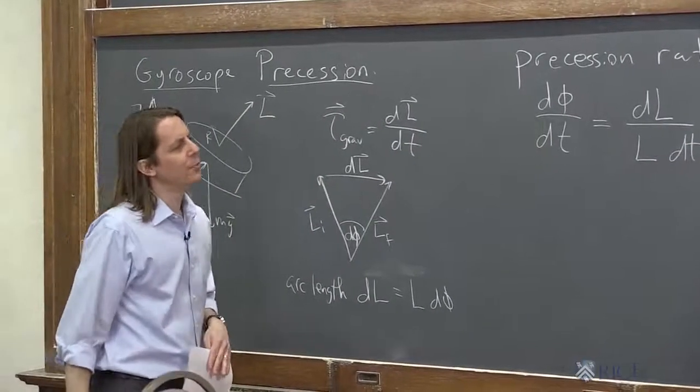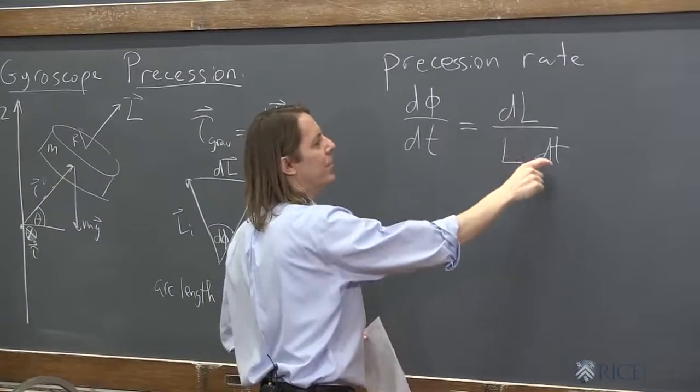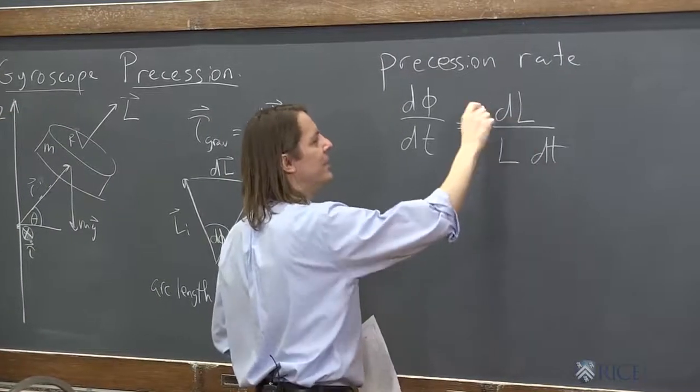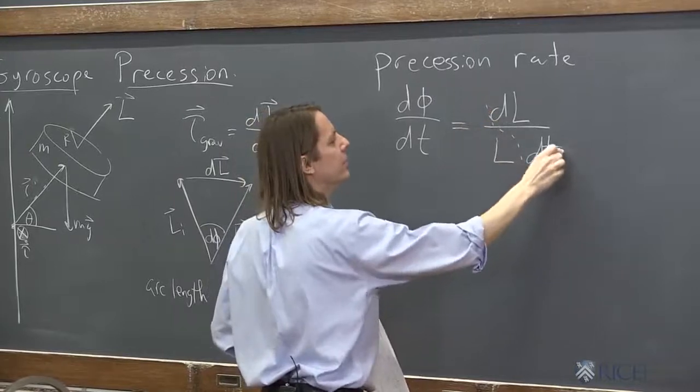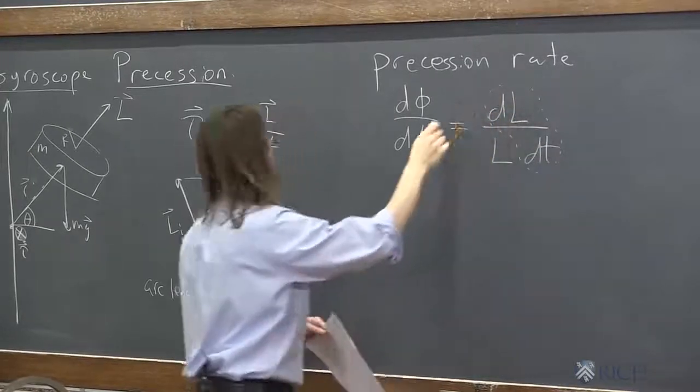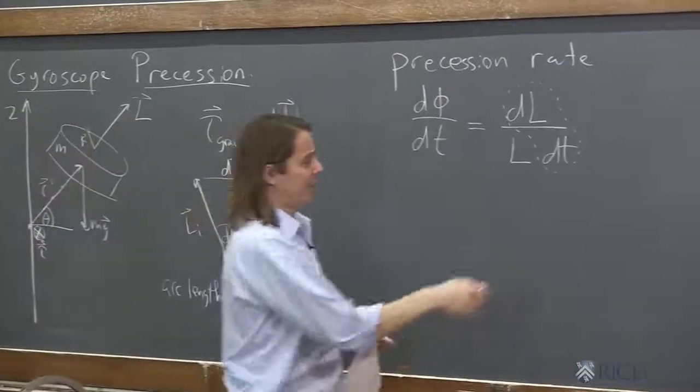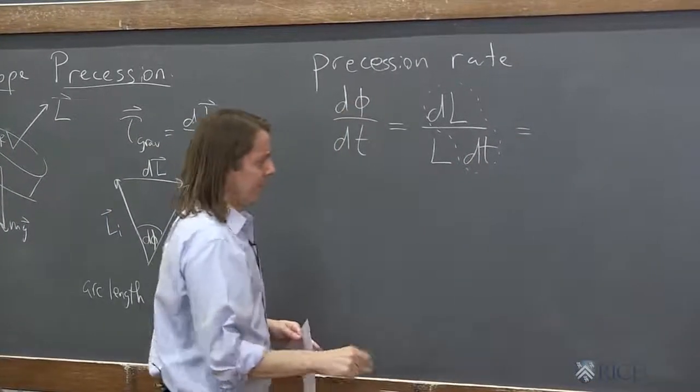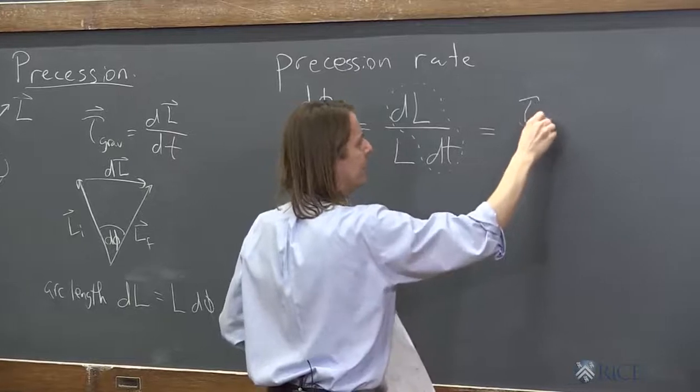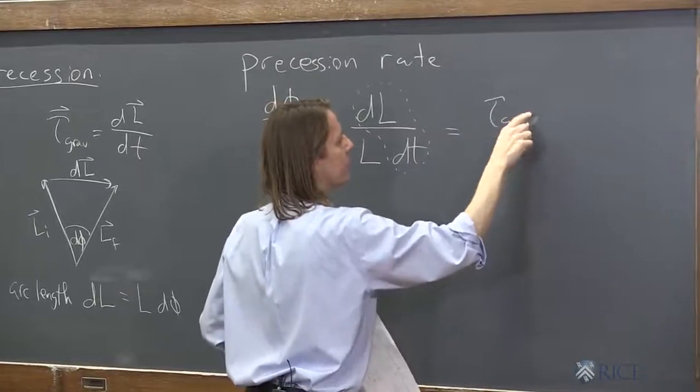But if we look at that, we realize, well, dL was over L, then it's over dt. But what about dL over dt? What is dL over dt? Oh, that's just the torque is dL over dt. It's the magnitude of the torque if we're not doing directions right now.